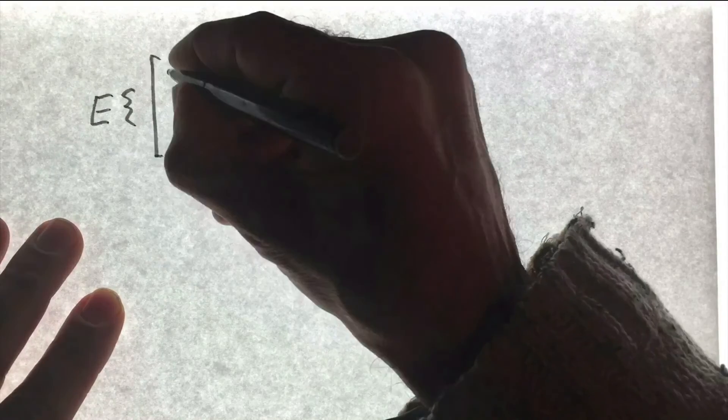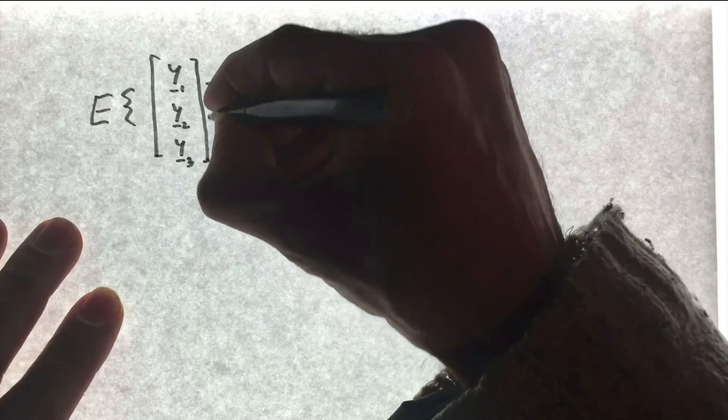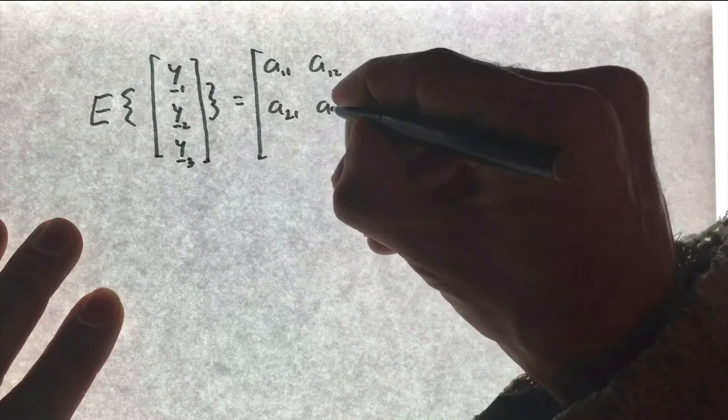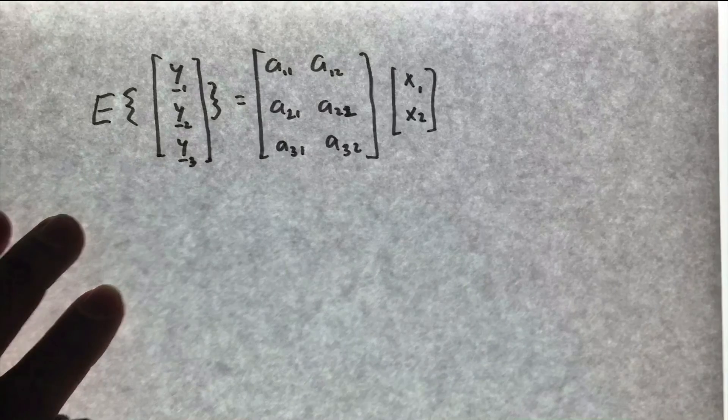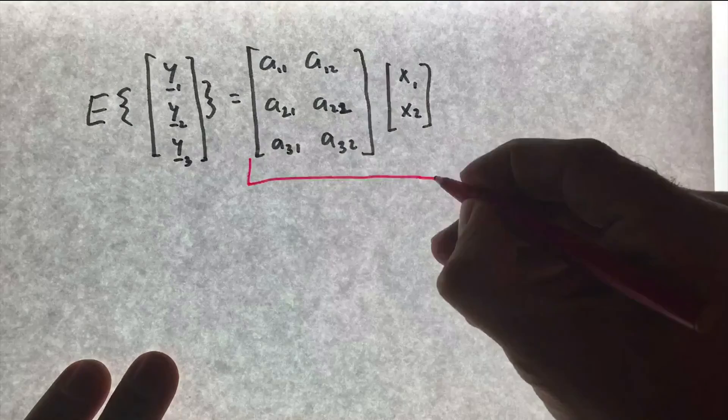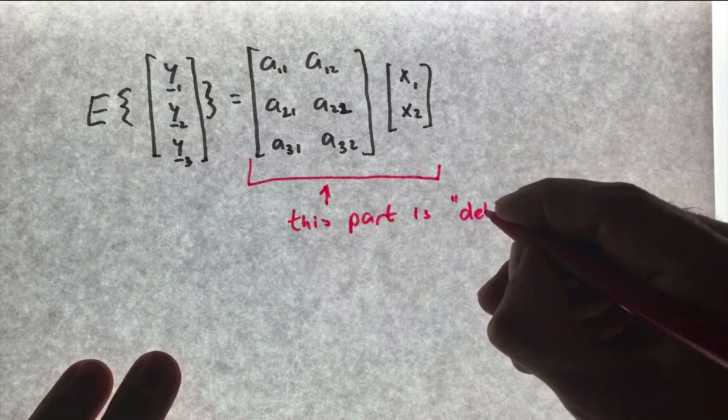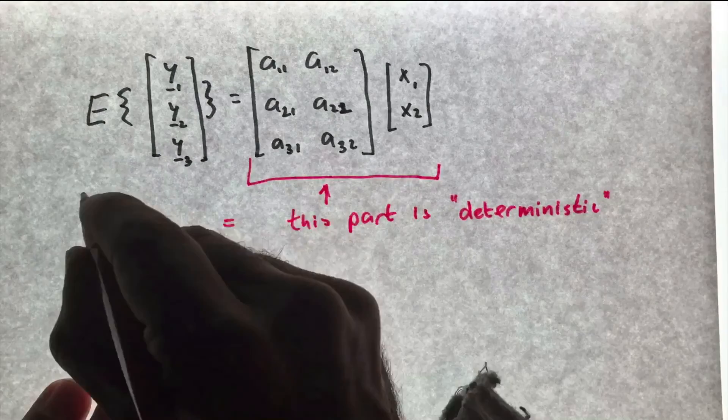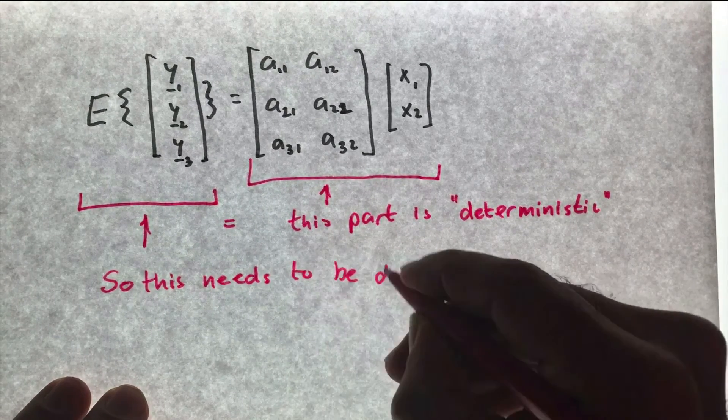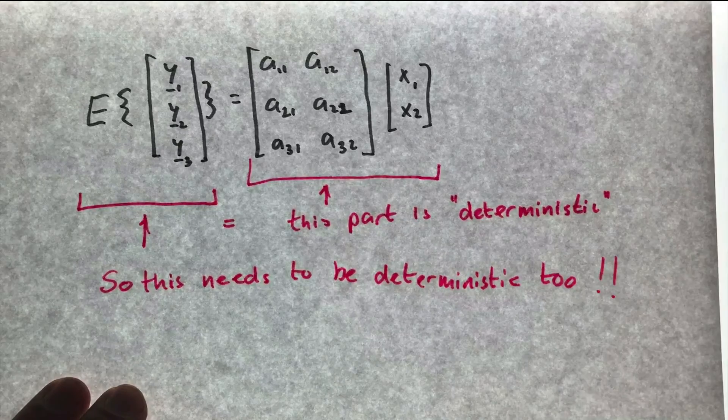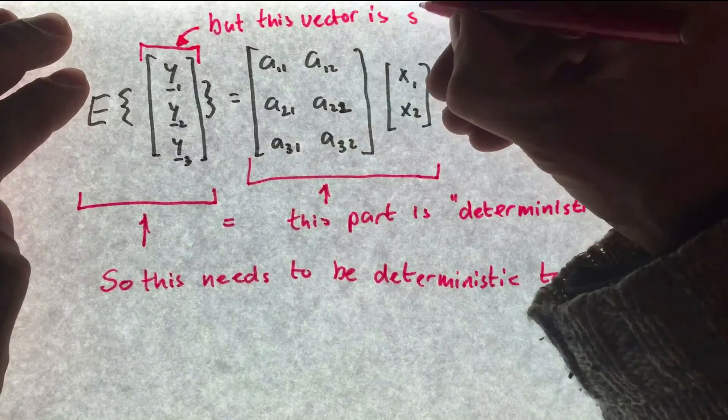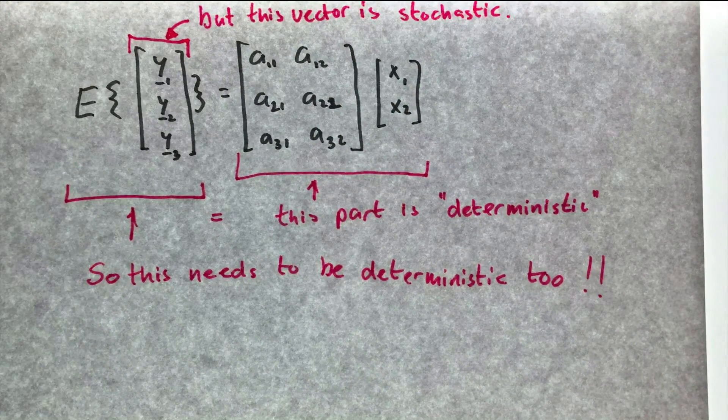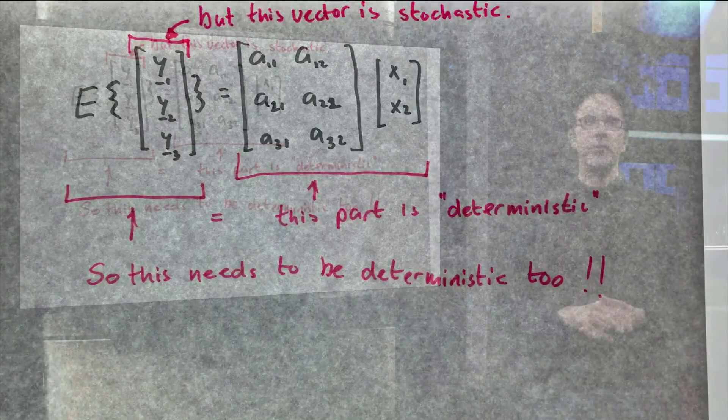So to summarize, we can write an alternative expression for the model of observation equations using the expectation operator. If we evaluate whether this equation is in balance, we find that the right hand side of the equation is deterministic, and therefore the left hand side needs to be deterministic too. Apparently the expectation operator converts a stochastic vector into a deterministic vector.